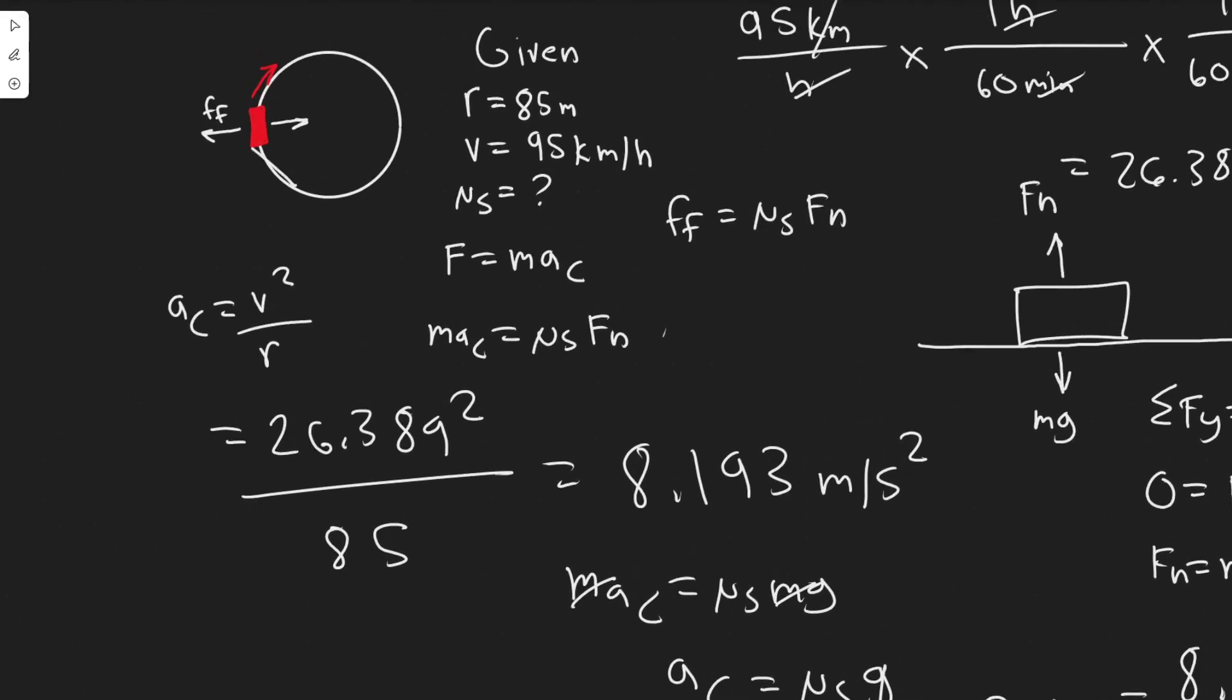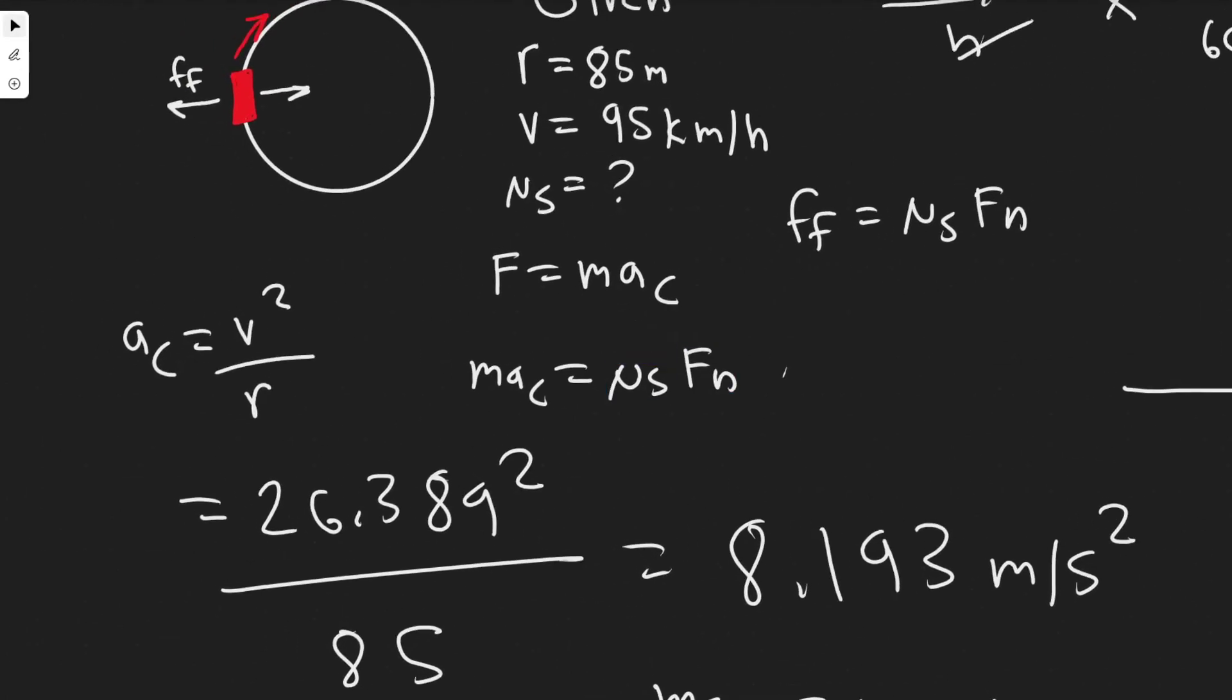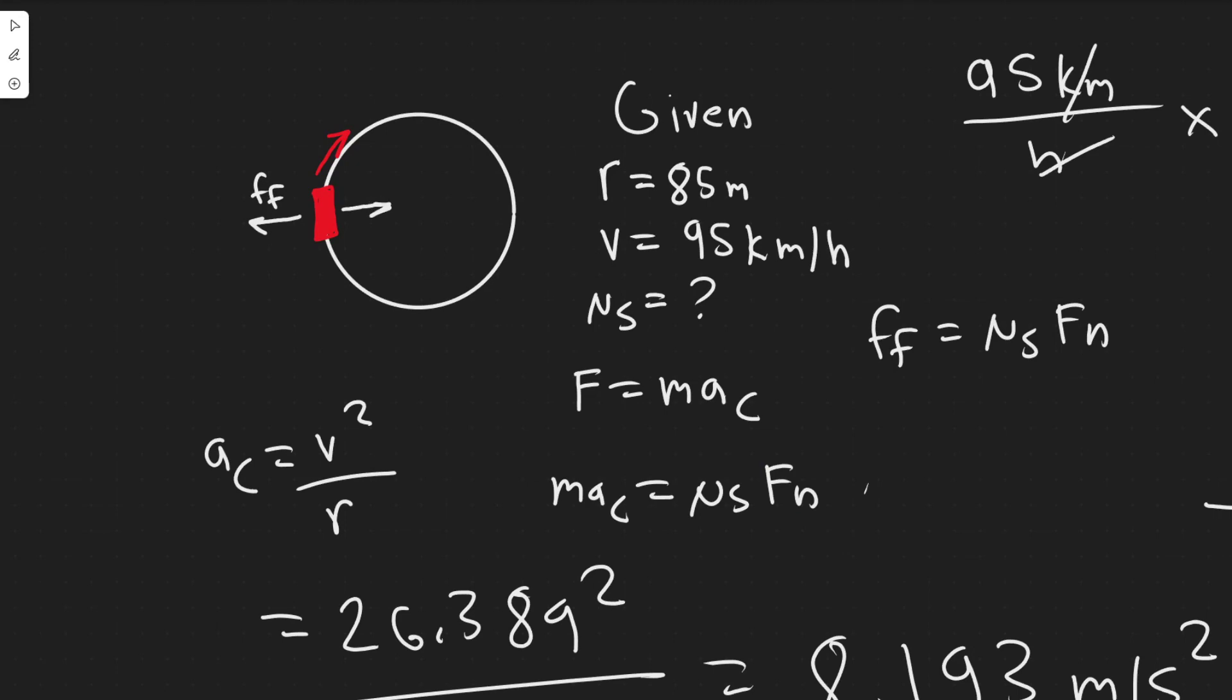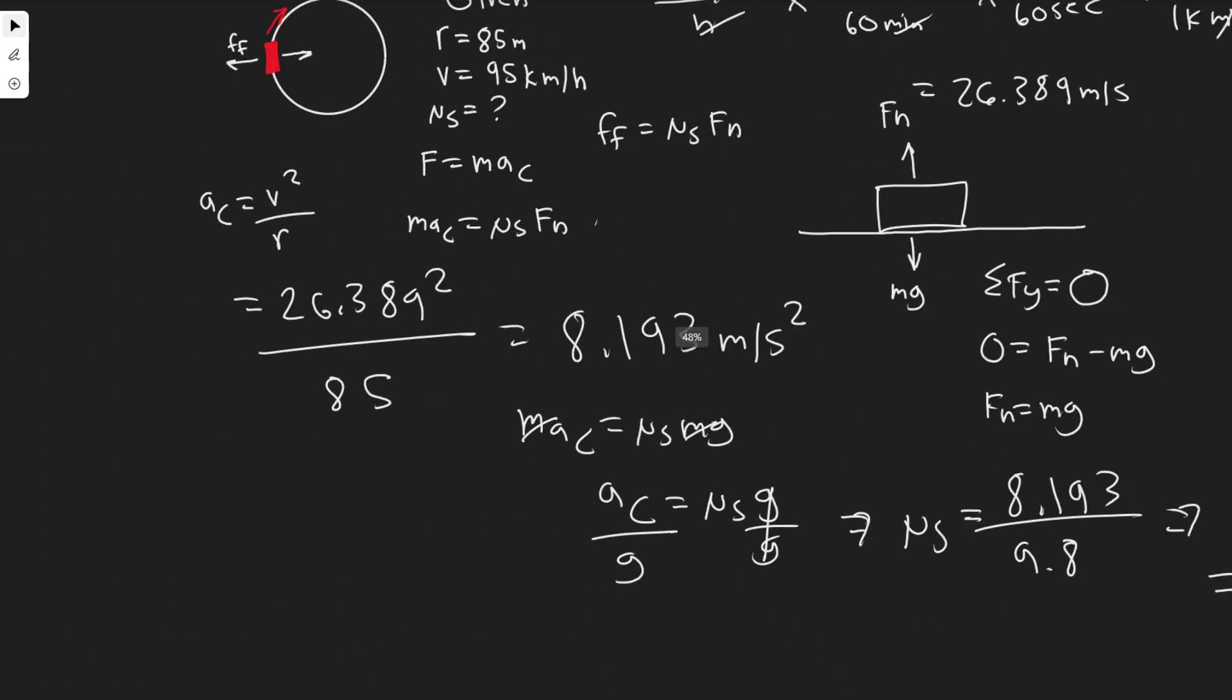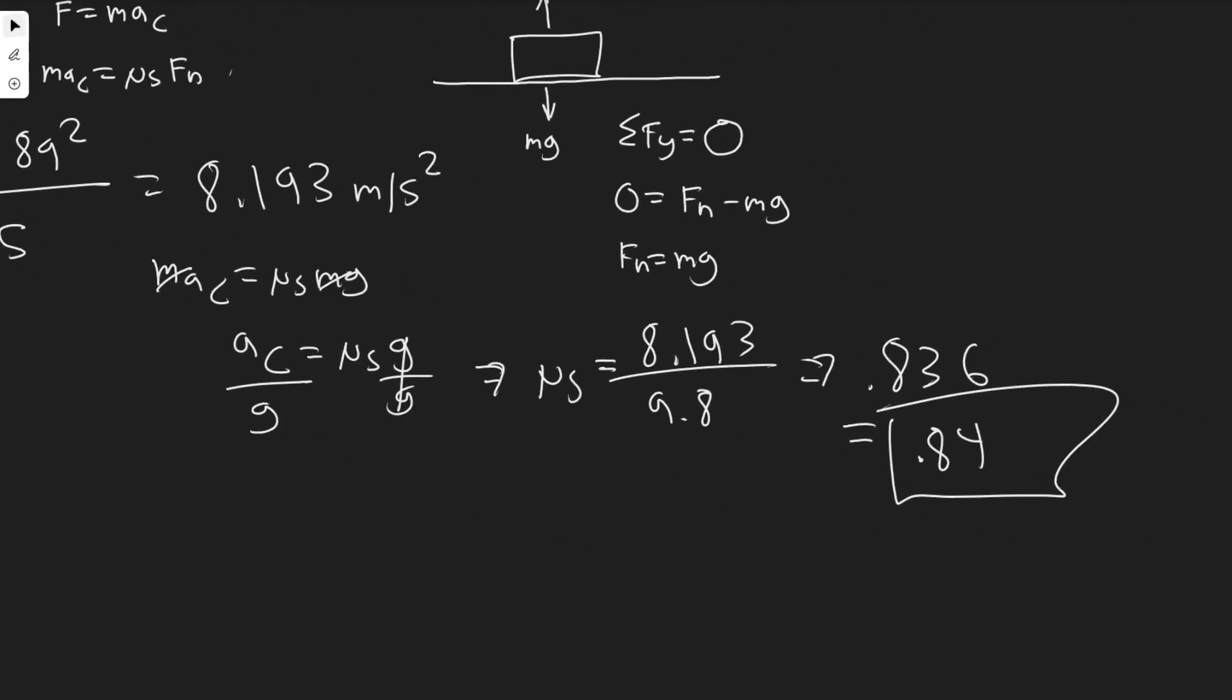Just keep in mind the main idea for this problem was setting the coefficient of static friction equal to the centripetal force, or m·aᴄ. That should make sense because it's going to pull you in and then this force has to counter it for it to be able to go. So 0.84, that's going to be your answer. Hopefully you found this useful.